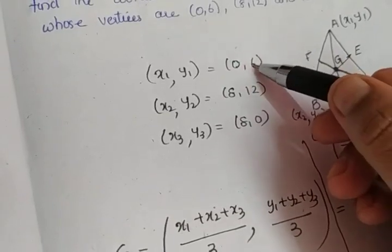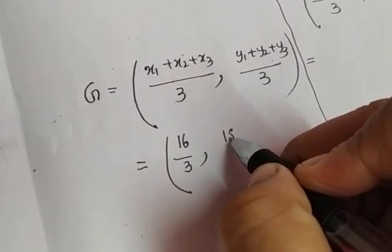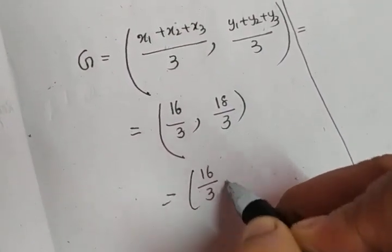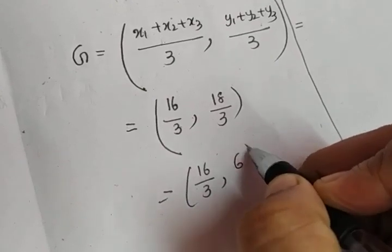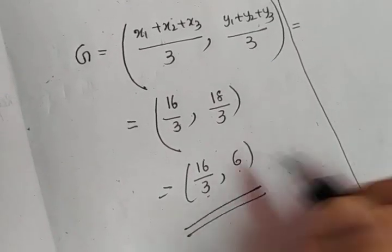Sum of Y coordinate: 6 + 12 gives you 18. 18/3. So, 16/3 cannot be simplified further. So, 16/3 and 18/3 is 6. So, the coordinate of the centroid is X coordinate 16/3 and Y coordinate 6.